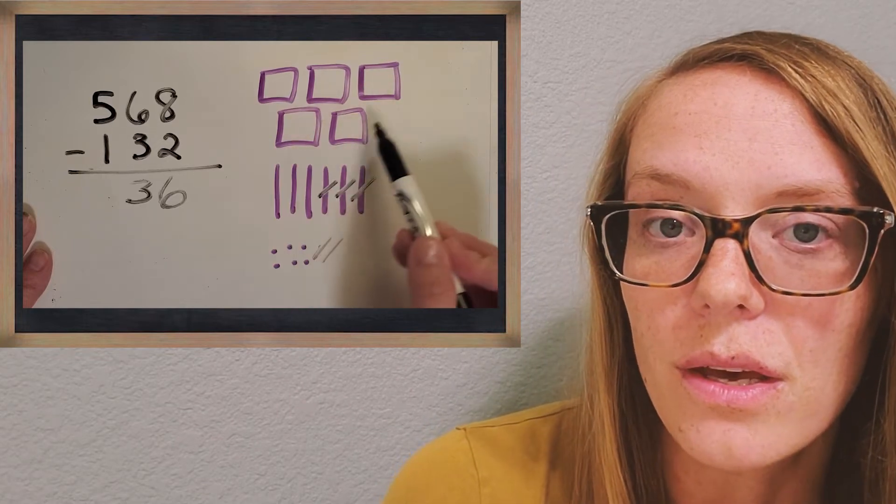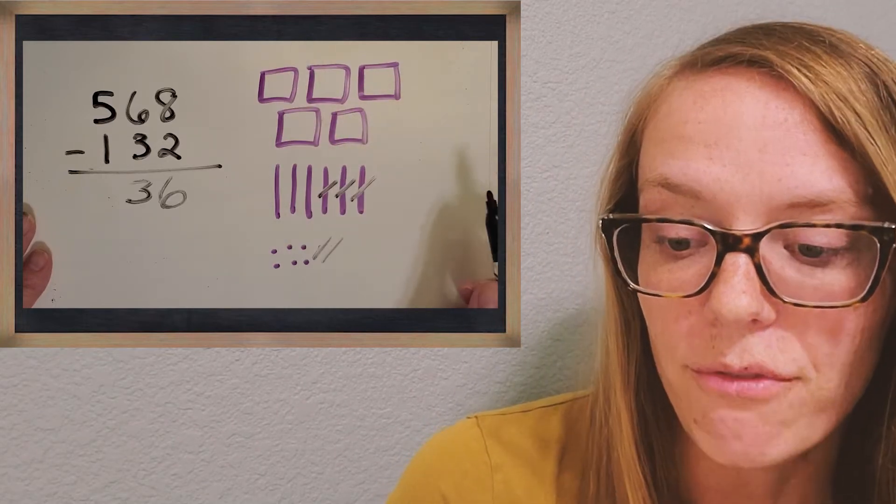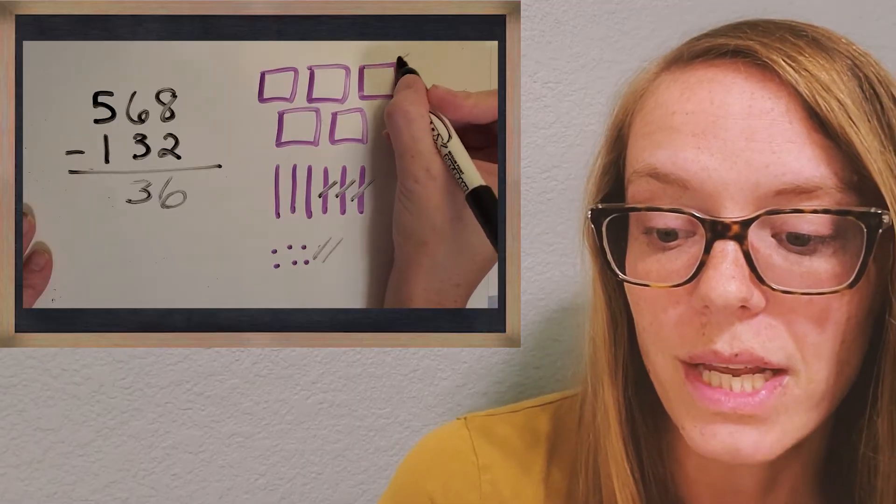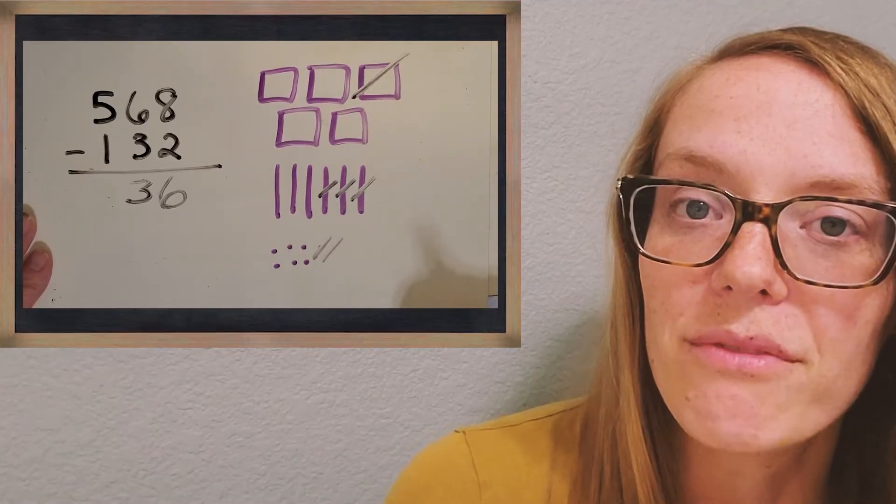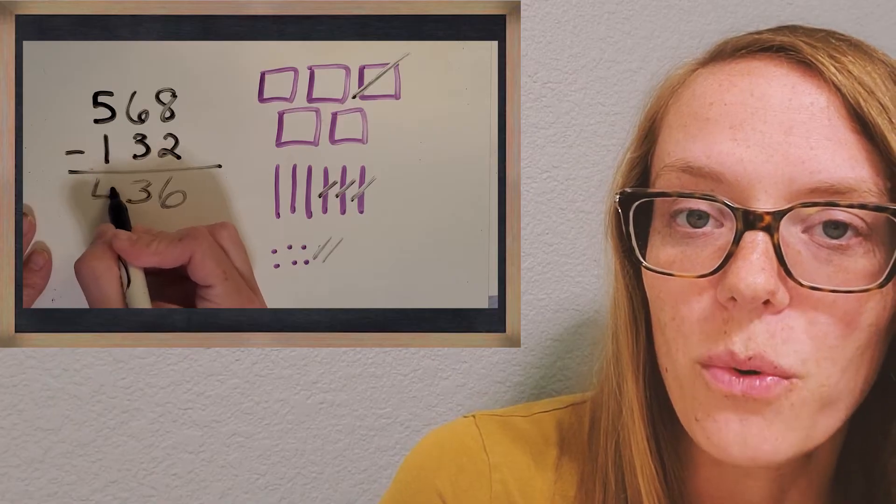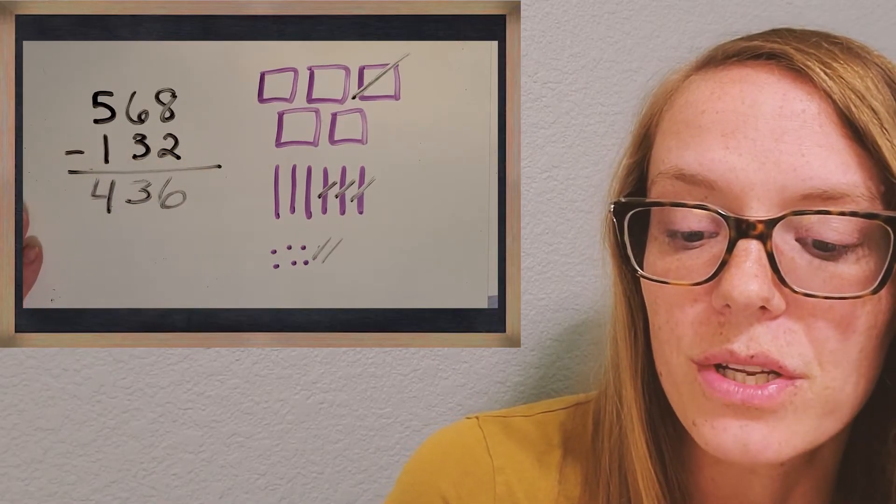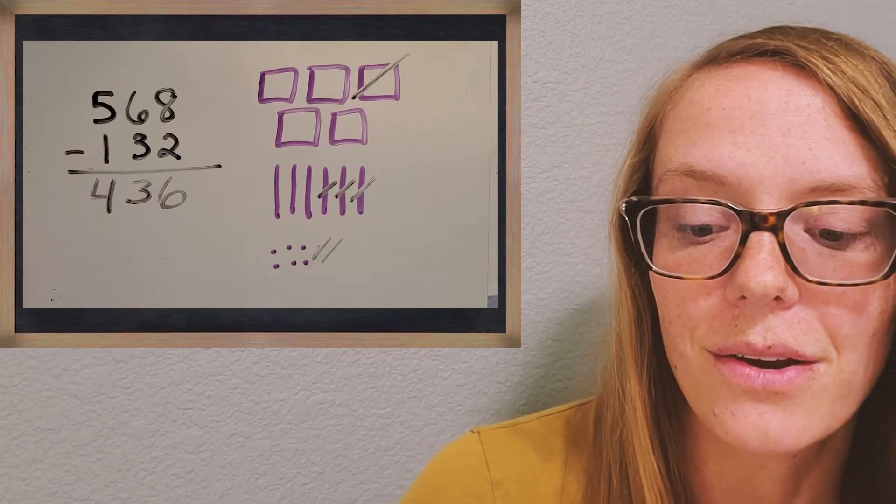Then do the same thing with the hundreds place. So we have 5 flats, and we just want to take away 1. What do you have left? 4. Okay, great, 4. So we have 436 as our answer.